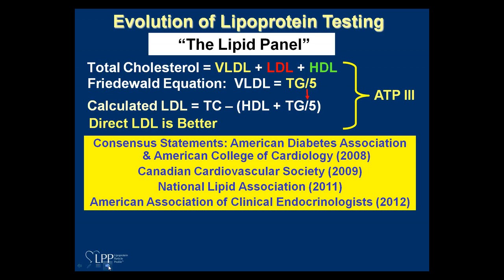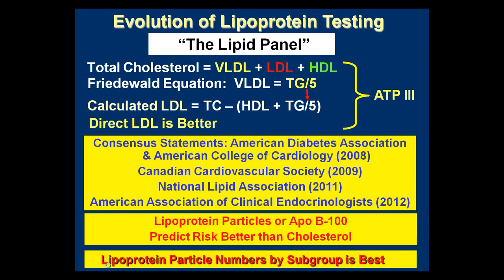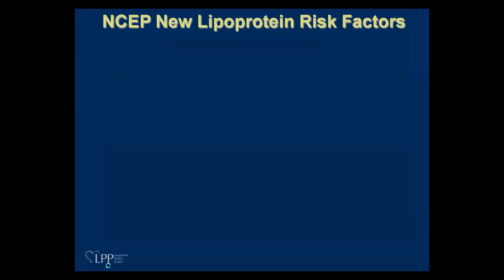What this means is that since the National Heart, Lung, and Blood Institute announced that ATP-4 was going to be canceled and they would default to the guidance of these different agencies, the guidance now is that particle numbers are more predictive of risk than cholesterol. Measuring particles or ApoB is a better predictor of risk than cholesterol, and an extension of that is that lipoprotein particle numbers measured by subgroups is even better than just knowing overall particle numbers like in an ApoB value.